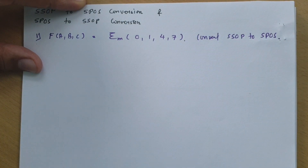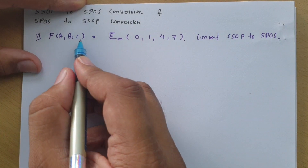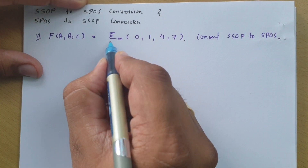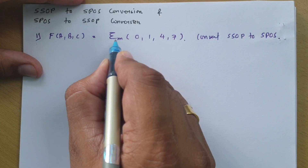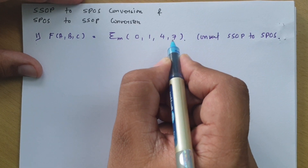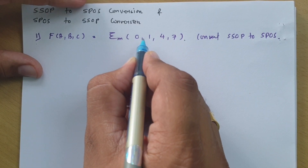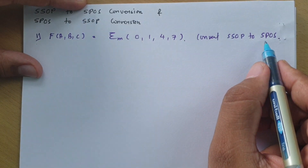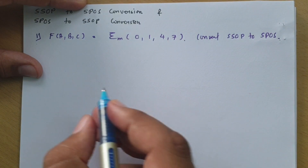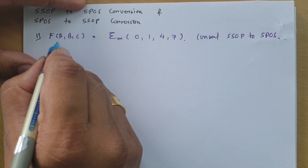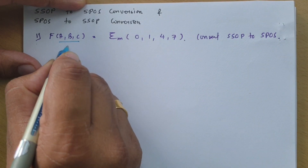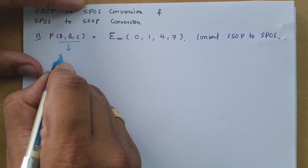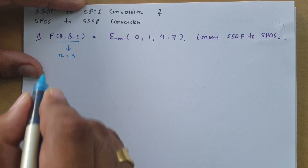The first question: here we have function ABC in SSOP form — that is, minterm form. We need to translate that into SPOS, meaning maxterm form. First we need to see how many variables are there. From this, there are three variables, so n equals 3.